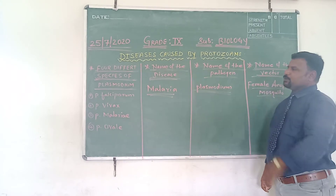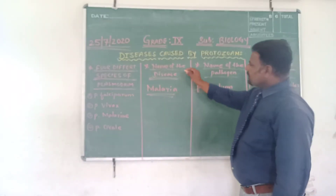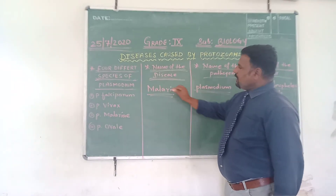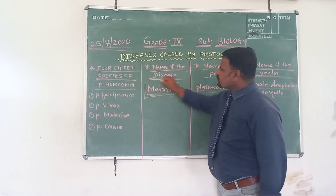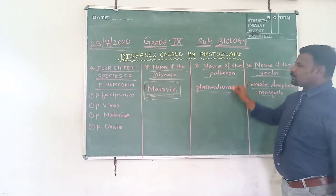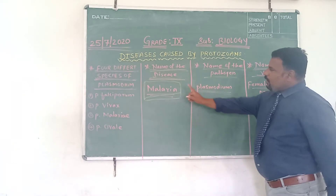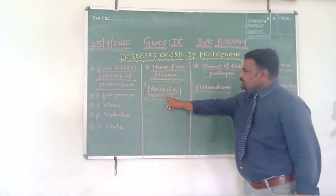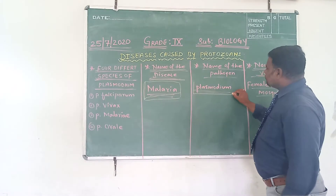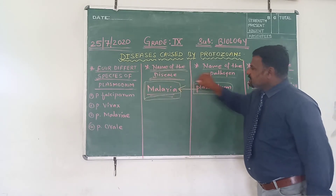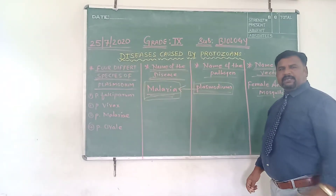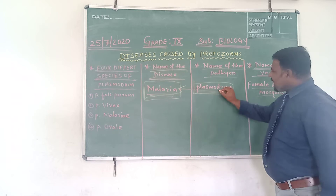For diseases caused by protozoa, we have taken the example of malaria. The name of the pathogen — the causal organism — which is responsible for the spread and cause of malaria is Plasmodium. Plasmodium is the pathogen that causes malaria.